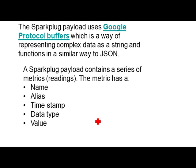The Sparkplug payload uses Google Protocol Buffers — another way of representing complex data, similar to JSON but more complex and not as easy to read. In fact, the specification examples are actually structured in JSON, not in Google Protocol Buffers. The payload consists of a series of metrics, and each metric has a name, an alias, a timestamp, a data type, and a value. The alias can be used in place of the name to make messages smaller — once you've established the name, you can use the alias, but the first message must include both the name and the alias.